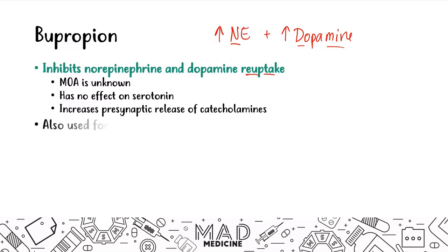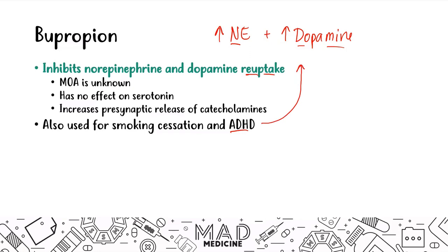Bupropion is also used for smoking cessation and ADHD. It's used for ADHD because it has the same end effect as CNS stimulants like amphetamines — you increase norepinephrine and dopamine. With bupropion, instead of increasing release, you prevent reuptake, leading to more norepinephrine and dopamine in the synaptic cleft.